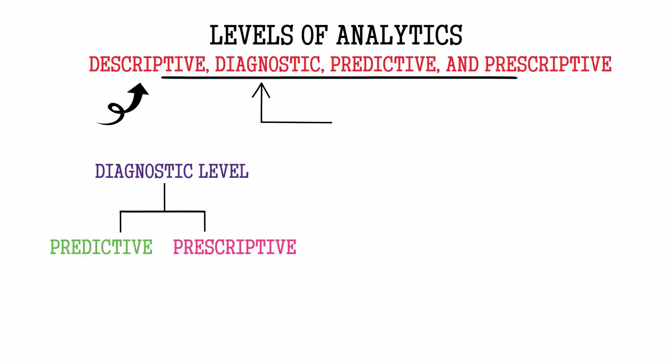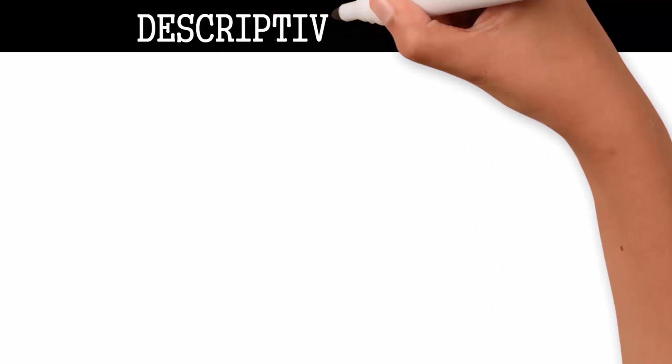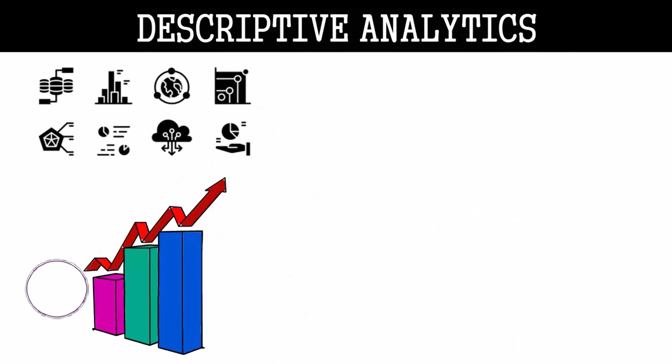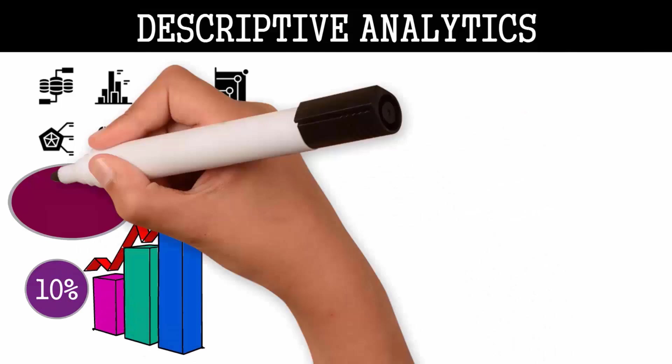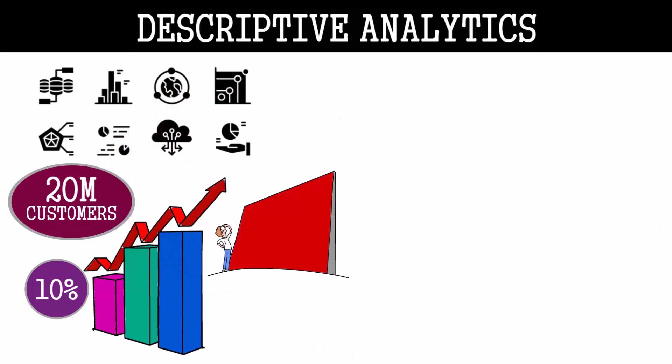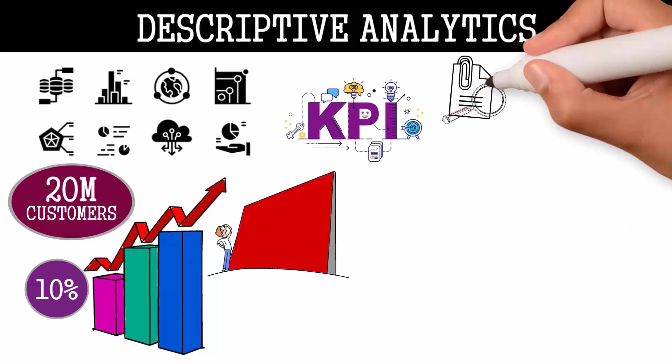Descriptive analytics is a general characterization or description of the data. For example: sales increased by 10 percent, the company reached 20 million customers, the color of the wall is red. You use descriptive analytics if you talk about KPIs, look at reports, or visualize dashboards.